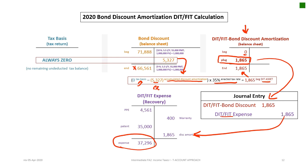The final balance in the deferred income tax expense account is $37,296: $4,561 from property, plant and equipment; a $400 credit for the warranty; $35,000 from patent development costs; and a credit of $1,865 for bond discount amortization. So the income statement will show deferred or future tax expense of $37,296, which matches the result from the other method.